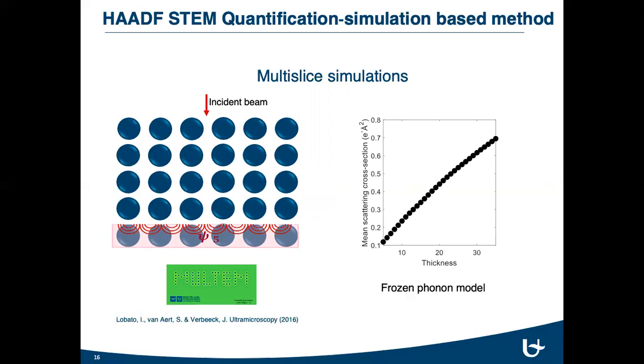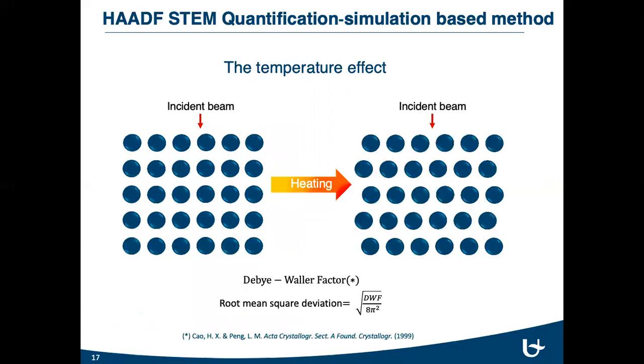During the simulations, the frozen phonon model is used for the specimen-electron interaction and microscope parameters are applied. But in addition to this, the temperature effect is also considered. It's known that as the temperature increases, the thermal vibration of atoms increases as well. And since we studied nanoparticles under heating environment, it's important to consider the temperature effect during the simulations by calculating the theoretical Debye-Waller factor and root-mean-square deviation of gold atoms with respect to their ideal positions.